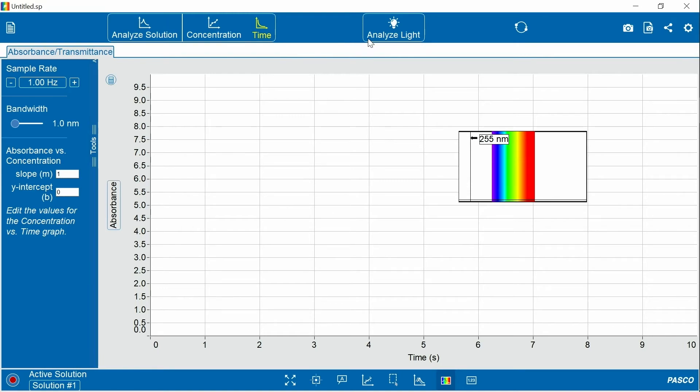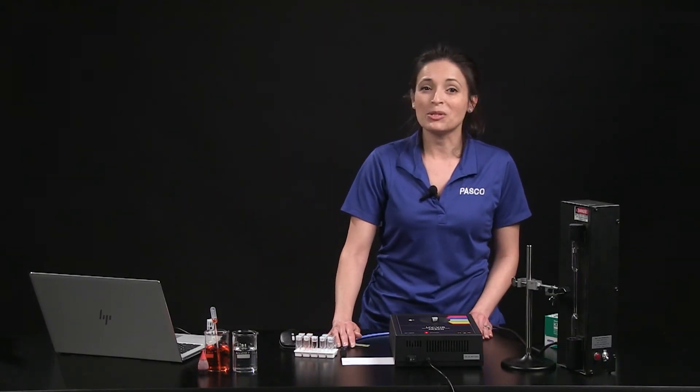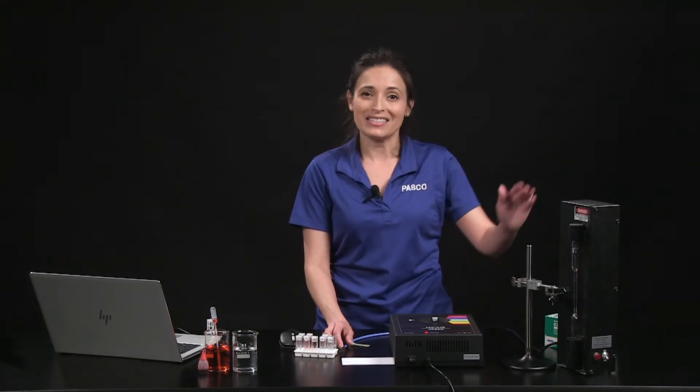And if you go to the Analyze Light tab, you can use the optional fiber optics cable to identify an element in a gas discharge tube or explore atomic energy level transitions.